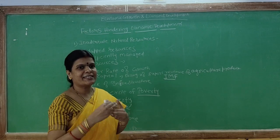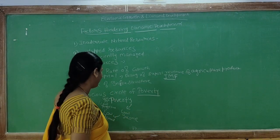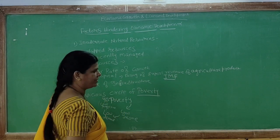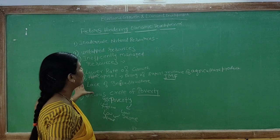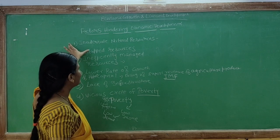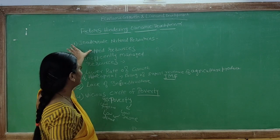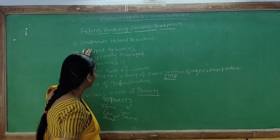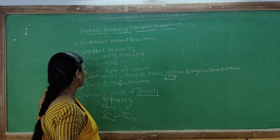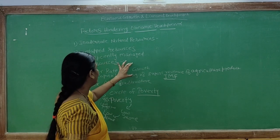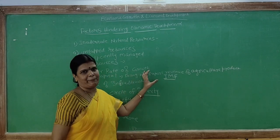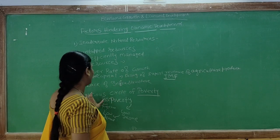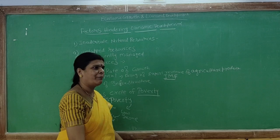These are the four factors which come in the way of economic development: first, lack of natural resources or inadequate natural resources, divided into untapped resources and inefficiently managed resources; second, lower rate of growth of human capital; third, lack of infrastructure; and fourth, the vicious circle of poverty.